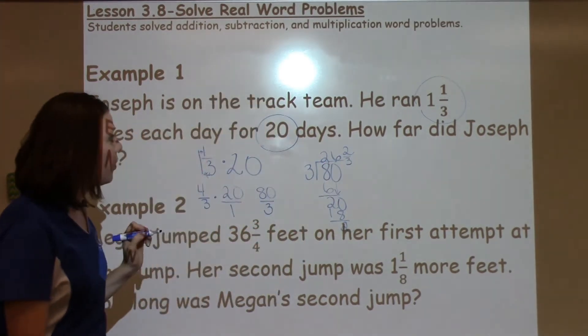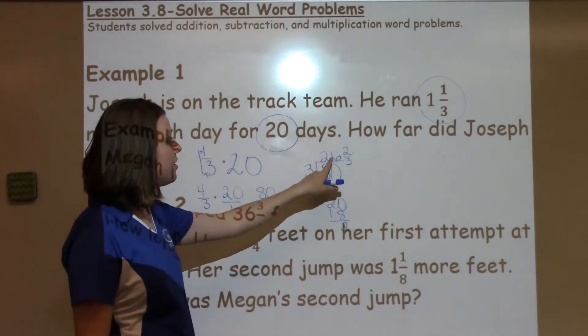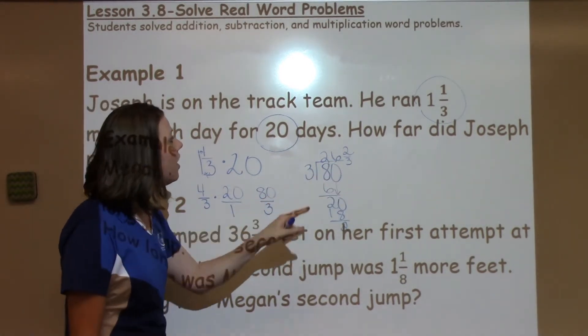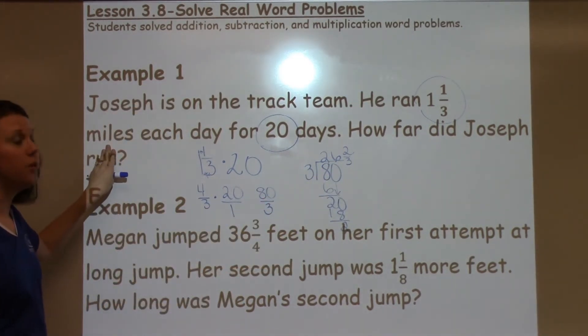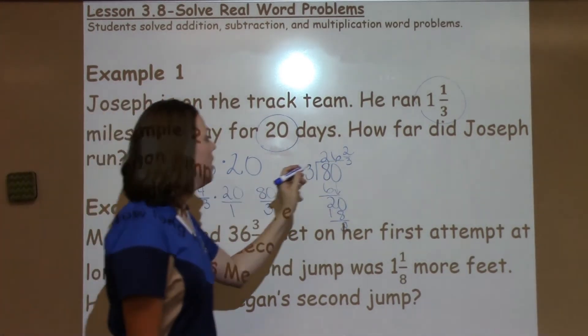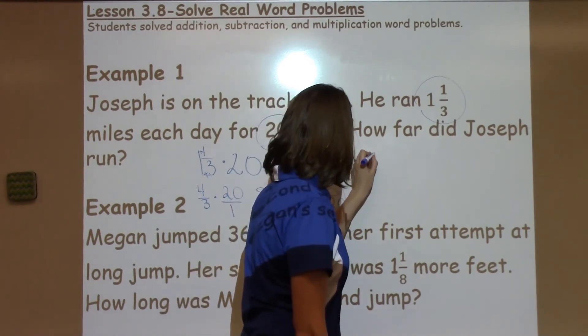So the question said, how far did Joseph run? He ran 26 and 2 thirds. I need to go back and look for my label, which is miles, and label it miles.